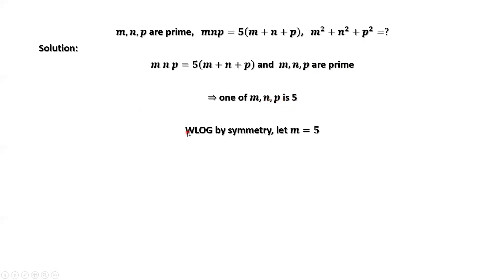Without loss of generality, by symmetry, let m equals 5. Why? We can assume m or n or p. From this expression, it doesn't matter because three variables are symmetric.